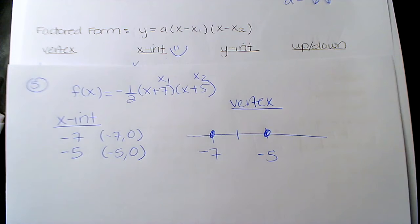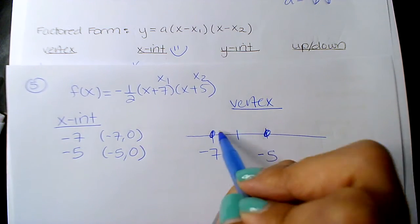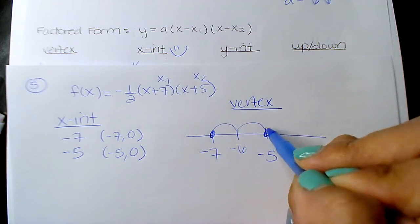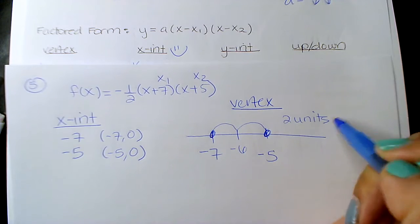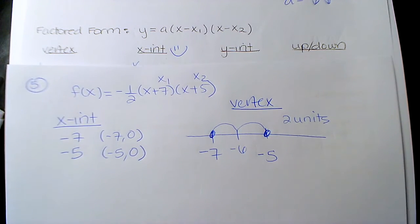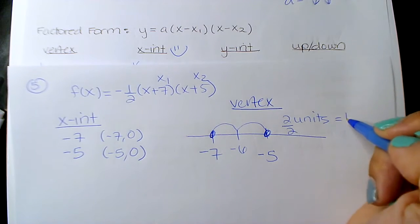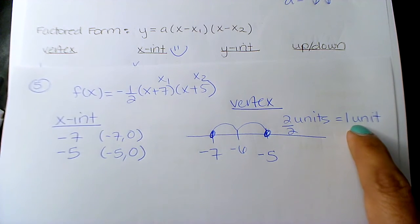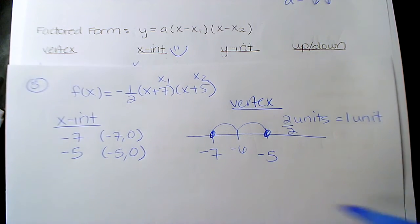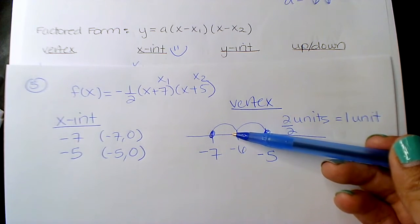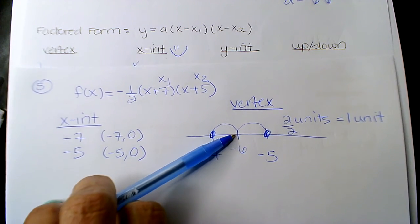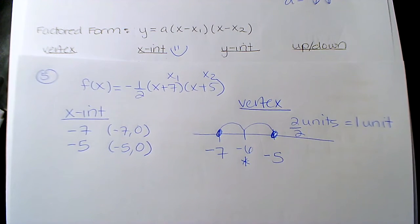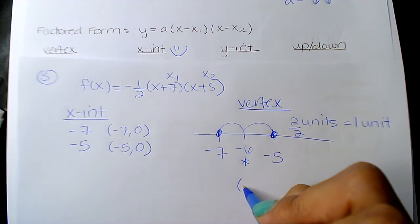If we did it the long process way, I would ask you to count the distance between the two intercepts. If this is negative 6, it's 2 units. Well, if we want the halfway point, cut that in half. What's half of 2? 1 unit. So your vertex, your axis of symmetry, is 1 unit from your intercepts — 1 unit from negative 5 to the left, or 1 unit to the right from negative 7. Either way, you land at negative 6.